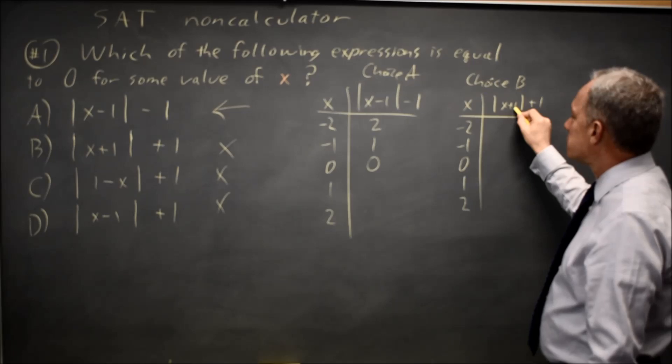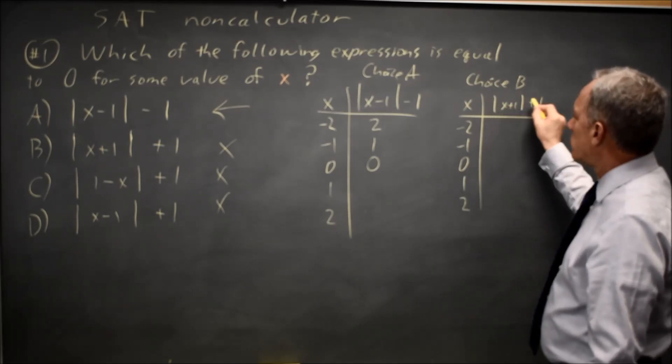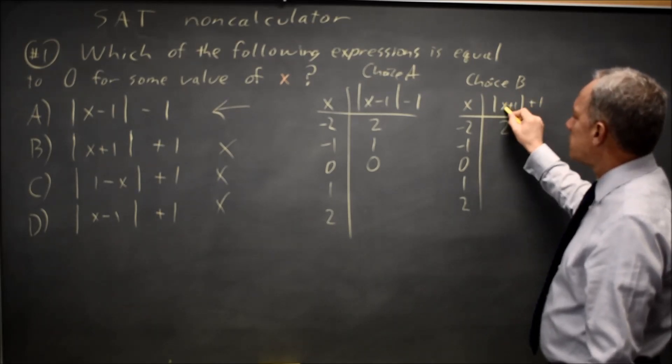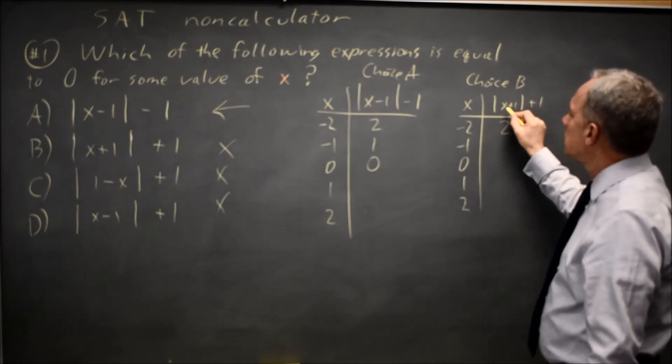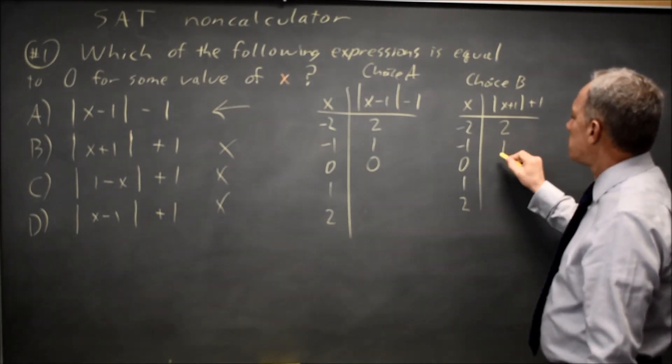At negative two, negative two plus one is negative one, absolute value is one, and add one, you get two. At negative one, negative one plus one is zero, absolute value of zero is zero, plus one is one.